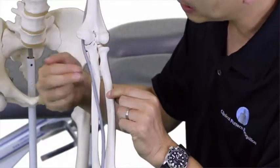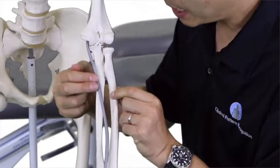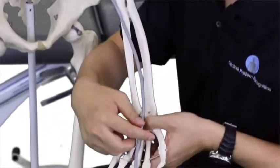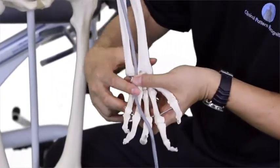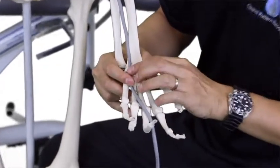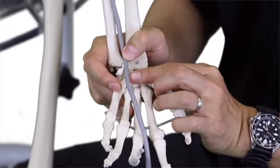You'll be tunneling through this region, then follow the entrapment site down to the pisohamate ligament or Guyon's canal.